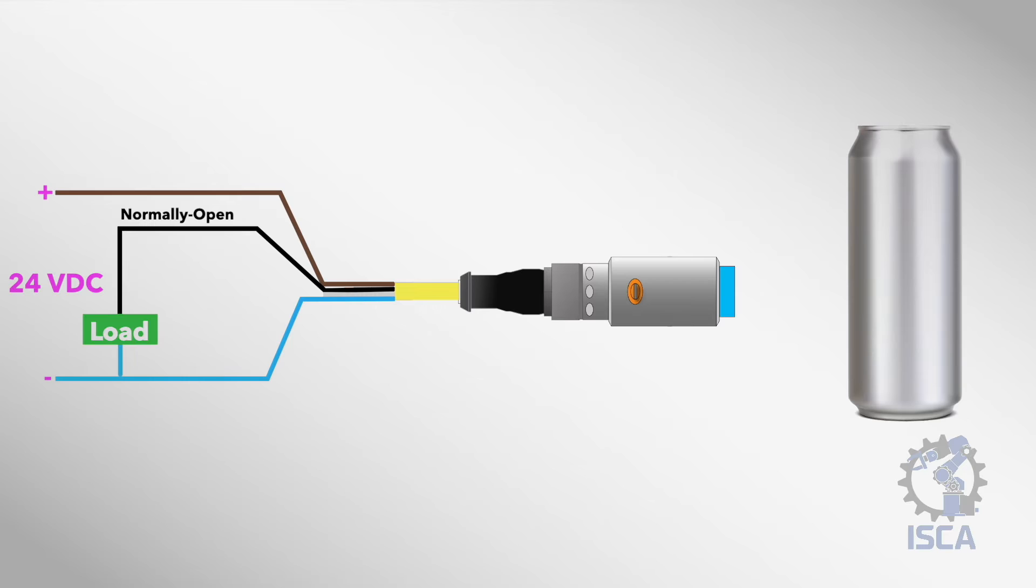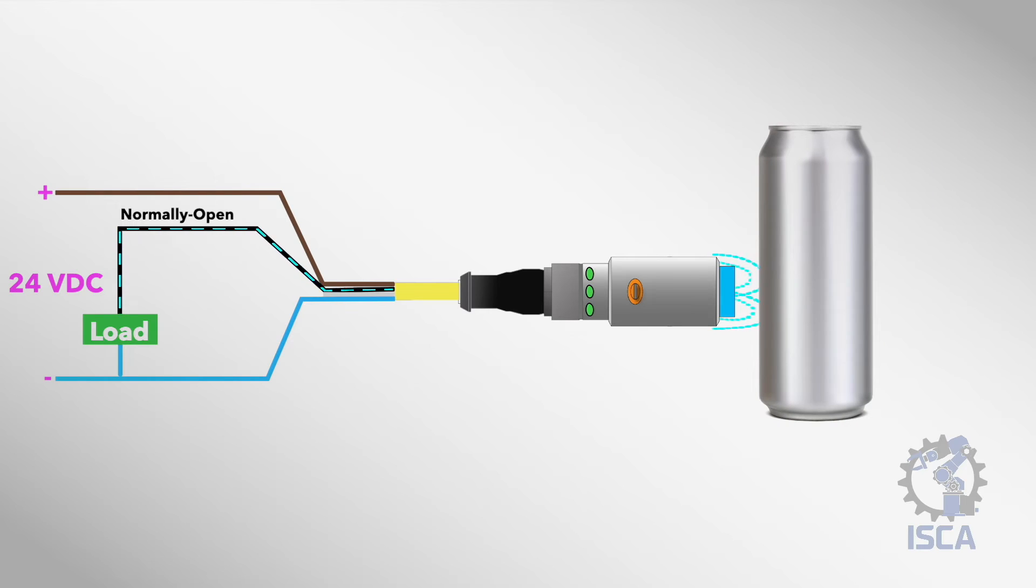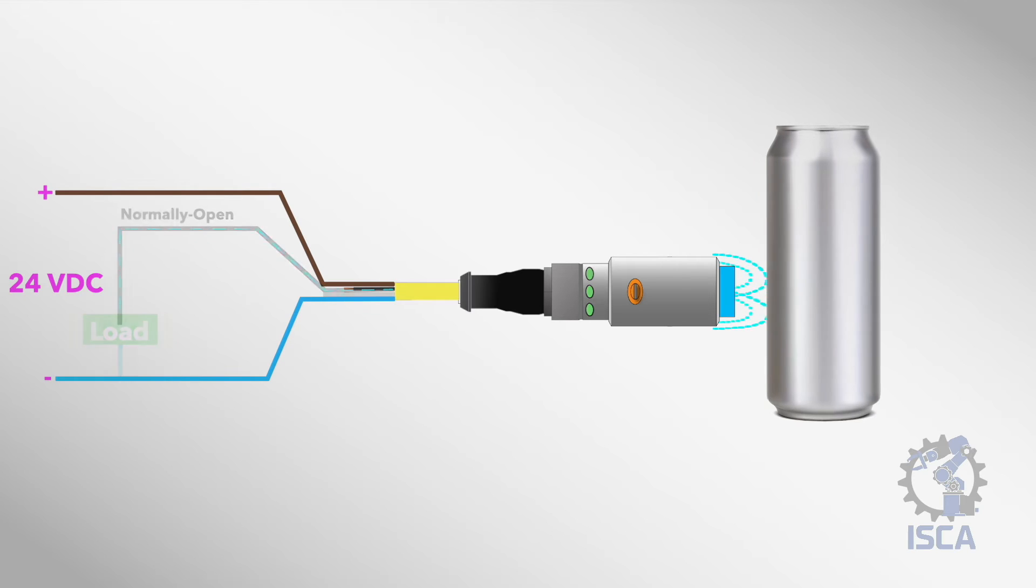The black wire is the normally open NO output. It remains inactive until the sensor detects a target, at which point a detection signal is sent over the black wire.